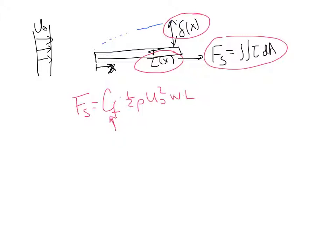And that friction coefficient, CF, is a function of the plate Reynolds number, REL, where REL is u0L over nu.